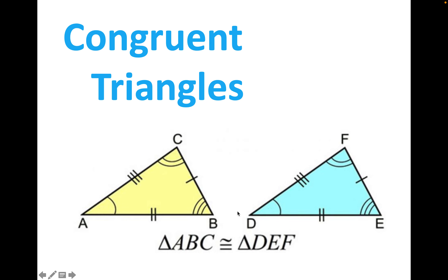Congruent triangles. The word congruent means identical. In geometry, when we have two shapes that are identical, we call them congruent. You can see two congruent triangles here. When shapes are congruent, all their corresponding parts are congruent — every angle is the same across these two, and every side is the same.